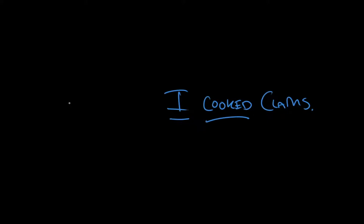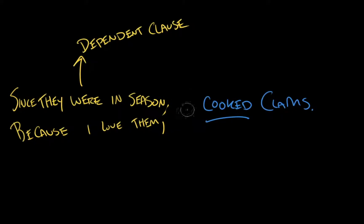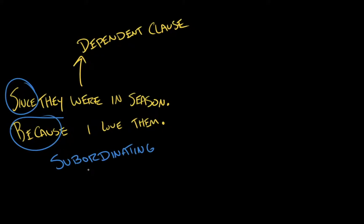Now I'm going to add another clause to the beginning of that sentence: 'Since they were in season, I cooked clams.' I've written this in yellow because 'since they were in season' is a dependent clause. Another example: 'Because I love them, I cooked clams.' If there were no 'I cooked clams,' these two yellow phrases — 'since they were in season' and 'because I love them' — would not be grammatical sentences on their own. These are what we would call sentence fragments. And why is that? It's because of 'since' and 'because.' These words are called subordinating conjunctions, and what they do is make the clauses they're attached to subordinate — beneath, reliant upon, leaning on — an independent clause.